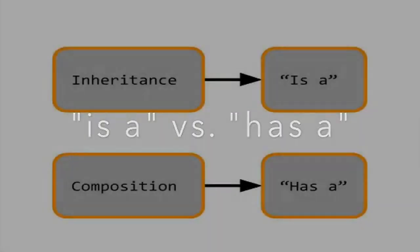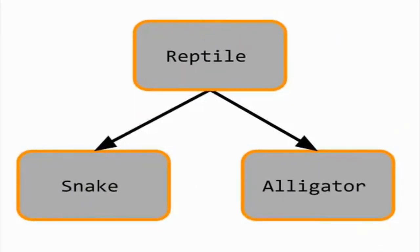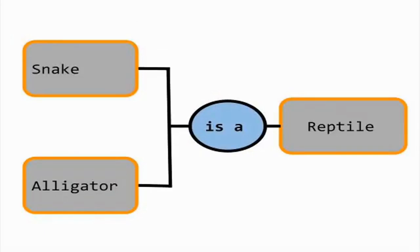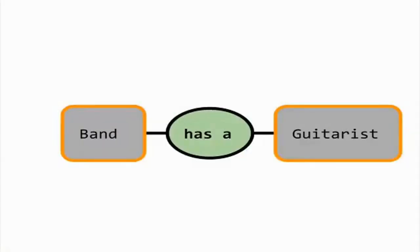Inherited classes are commonly described as having an is-a relationship with each other, while composition involves a has-a relationship between classes. We can say that snake is a reptile and that alligator is a reptile, but we cannot say that guitarist is a band. Instead, we say that the band has-a guitarist.